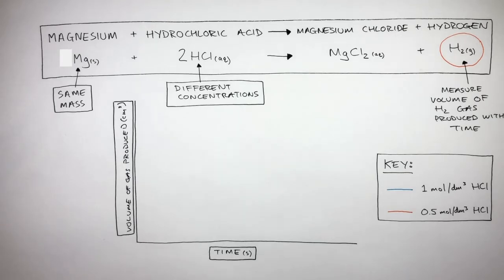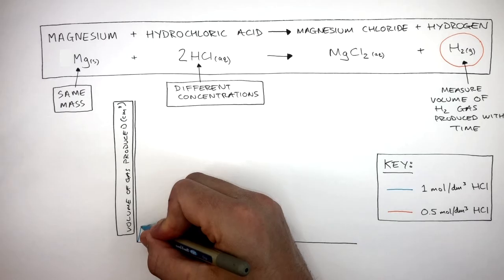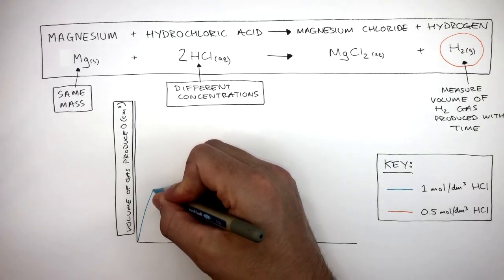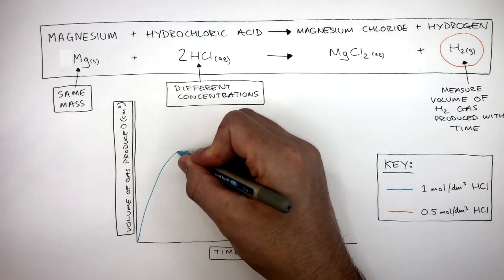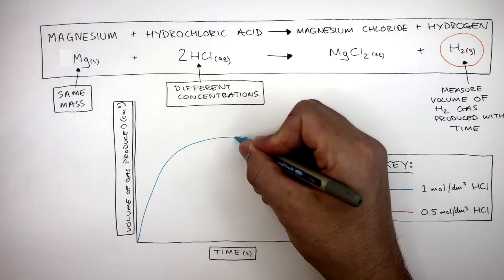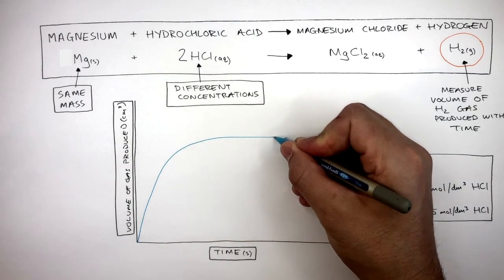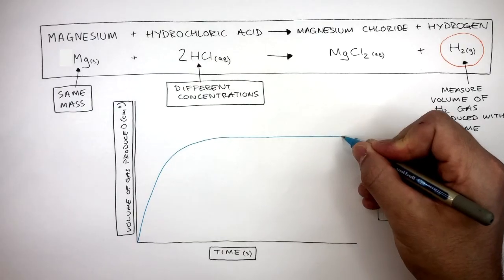For the higher concentration initially the rate of reaction is faster. As the reaction progresses the rate slows down as the curve becomes less steep. Eventually the curve becomes flat or horizontal as no more gas is being produced. The reaction has now stopped.